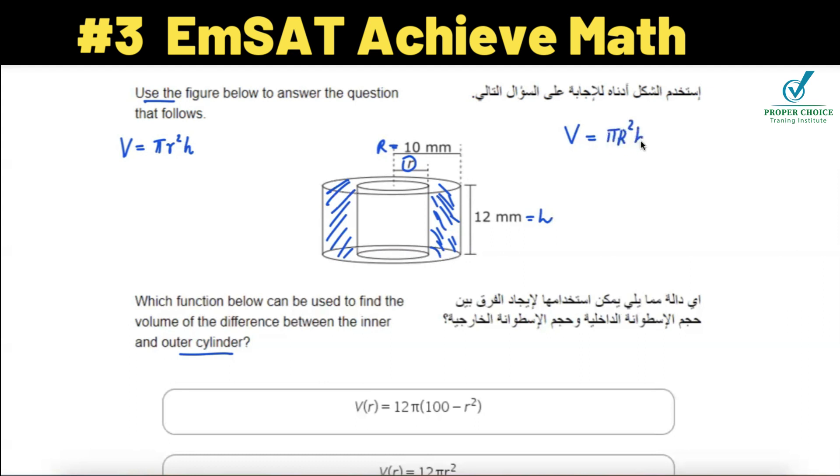...R²h minus the volume of the inside cylinder, which is going to be πr²h. If you take π and h as common, factoring out π times h, that is R² minus r² as the difference. The h value is 12, so if you substitute h as 12...